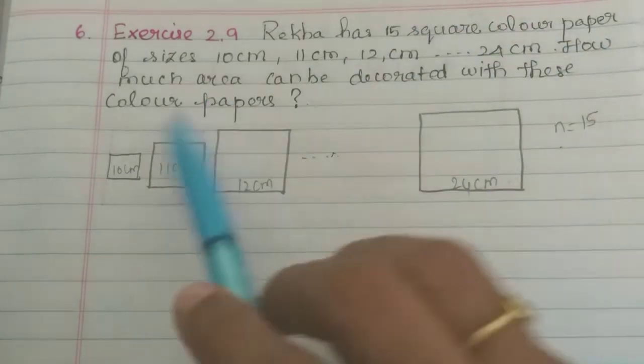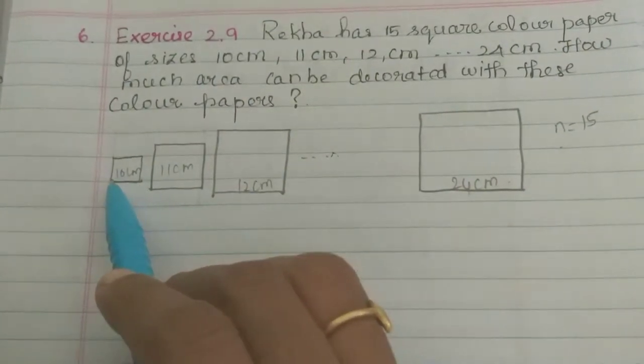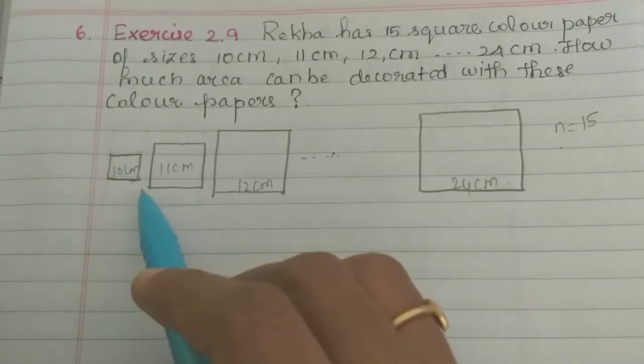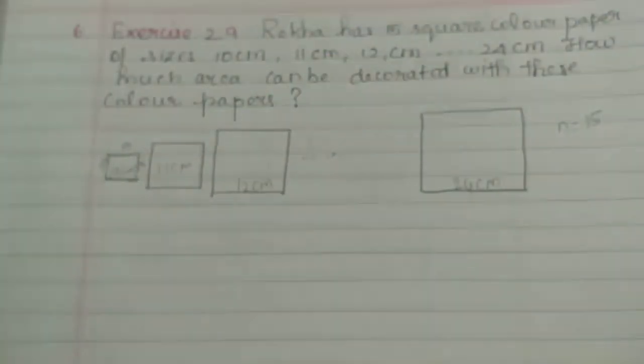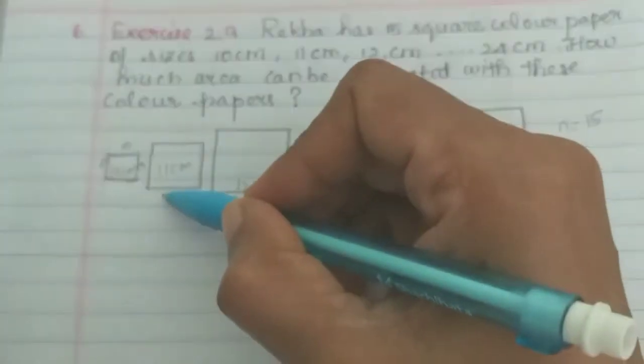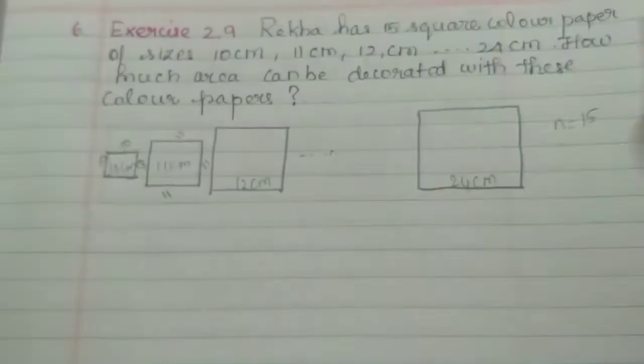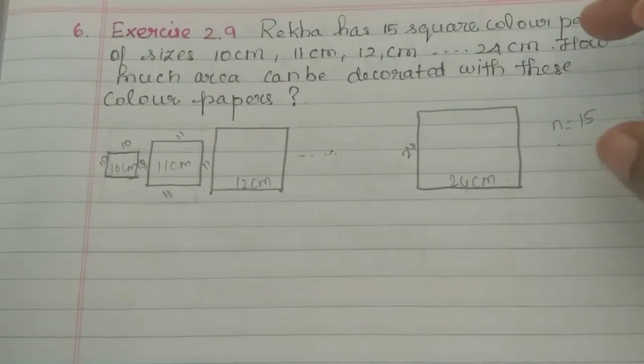So the size is 10 cm. The square has 4 equal sides. Then the square is 11 cm, then the square is 24 cm.